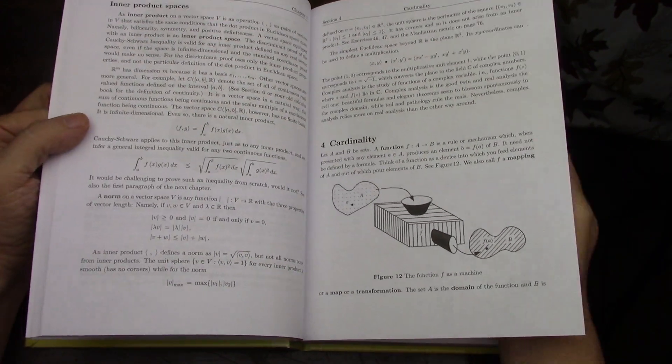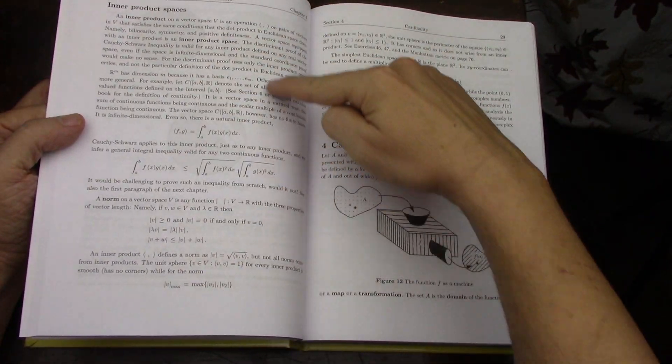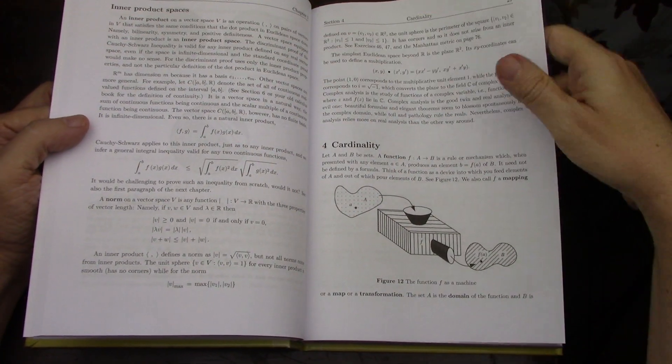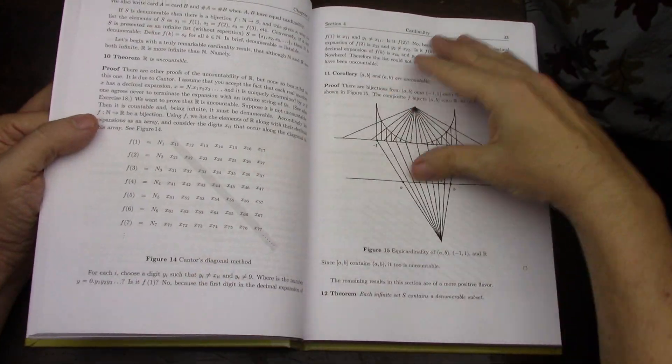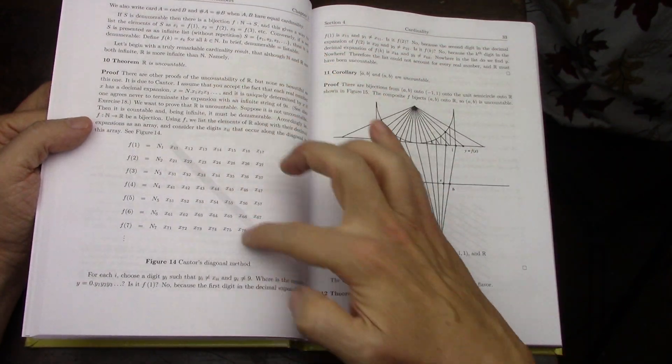So I don't think that detracts. Inner product spaces, hello linear algebra. Cardinality. Yeah, all your Cantor set stuff. Really great figures.